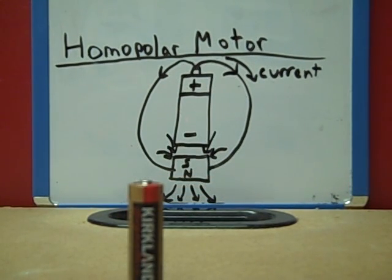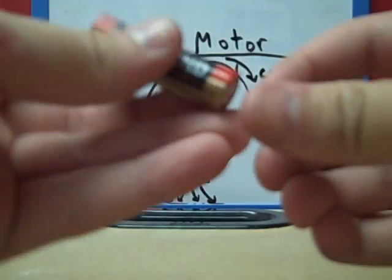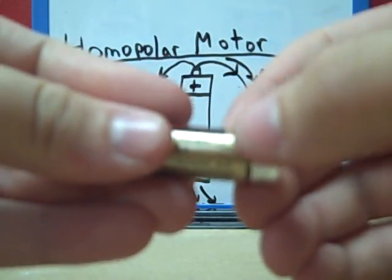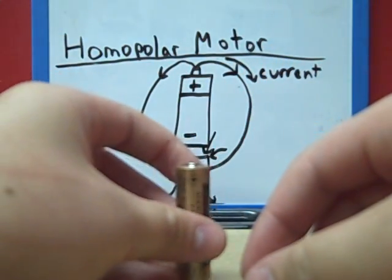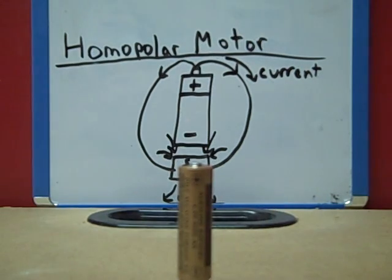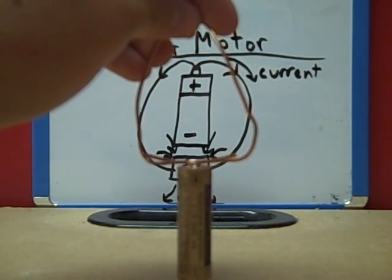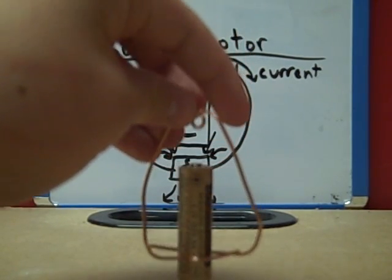Now that you have all of your materials, the first thing you need to do is attach the magnet to one end of your battery. I am attaching it to the negative end of the battery. Next, form your wire into this shape so that it can be placed around the battery and around the magnet.